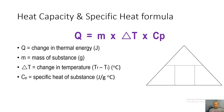The formula is Q equals M times change in temperature times specific heat. Q represents the change in thermal energy, with units in joules. M stands for the mass of the substance in grams. Delta T is the change in temperature, calculated as final temperature minus initial temperature, in degrees Celsius. Specific heat has units of joules per grams degrees Celsius.